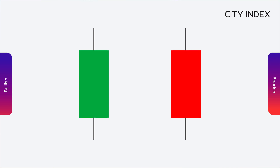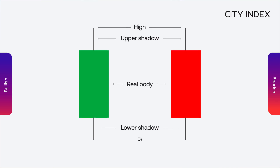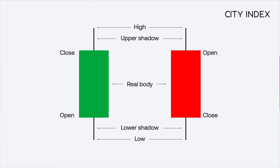The color of the candle signifies whether the candle closed above or below its opening price. If the candle has a green body, then the bottom of the body represents the opening price and the top of the body shows the closing price. This is reversed on a red candle, where the top of the body shows the opening price and the bottom shows the closing price.